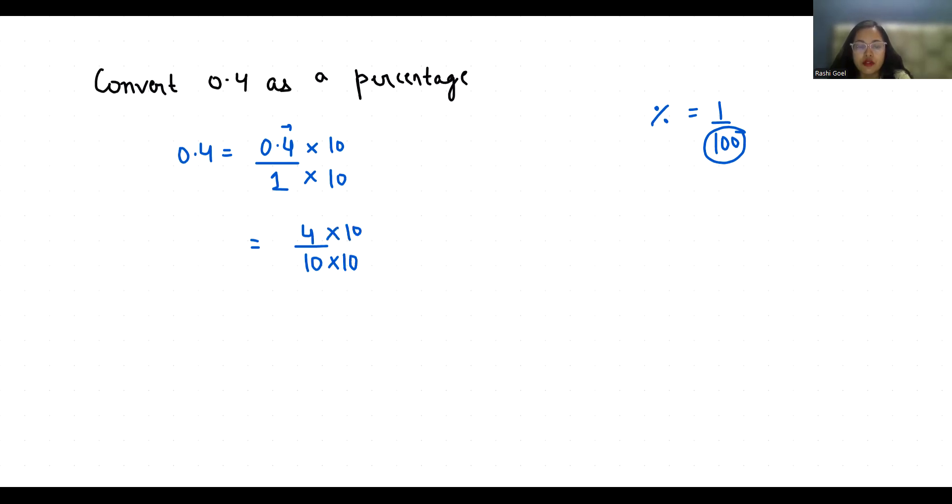So our numerator becomes 40 and denominator becomes 100 which I can rewrite as 40 times 1 by 100, and we can replace this 1 by 100 with this percentage sign. So 0.4 in terms of percentage is 40%.